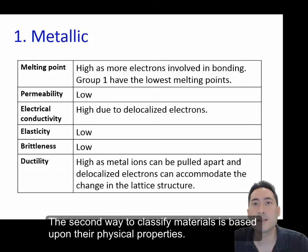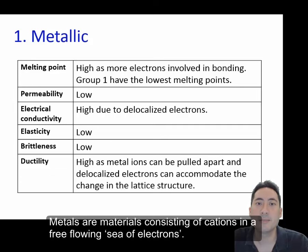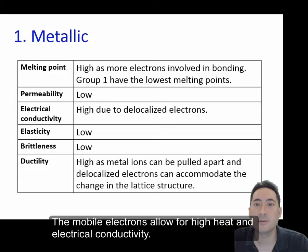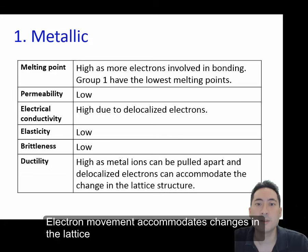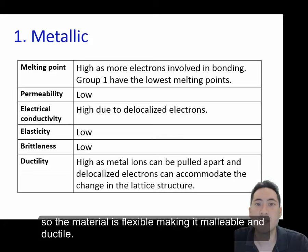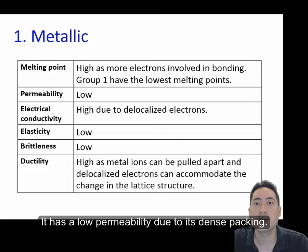The second way to classify materials is based upon their physical properties. Metals are materials consisting of cations in a free-flowing sea of electrons. The mobile electrons allow for higher heat and electrical conductivity. Electron movement accommodates changes in the lattice, so the material is flexible, making it malleable and ductile. It has low permeability due to its dense packing.